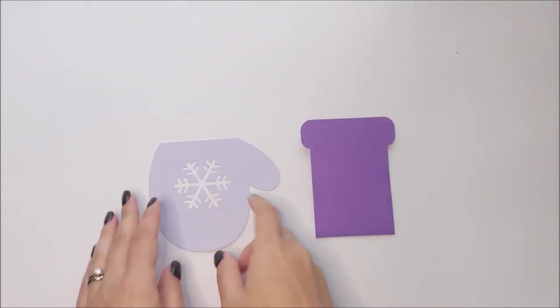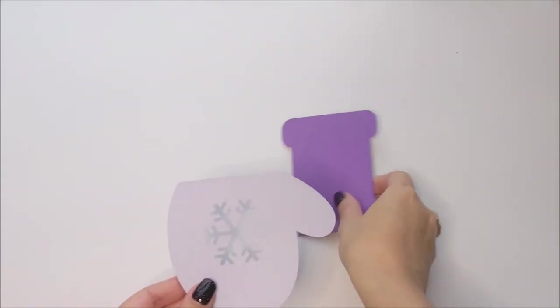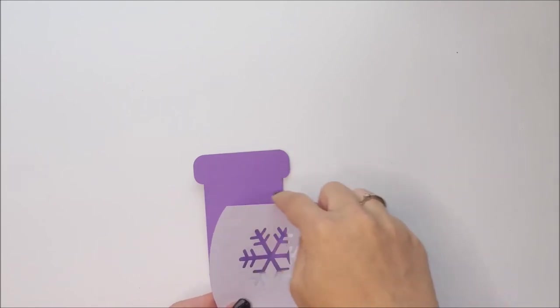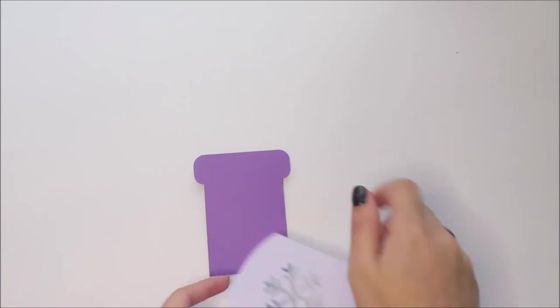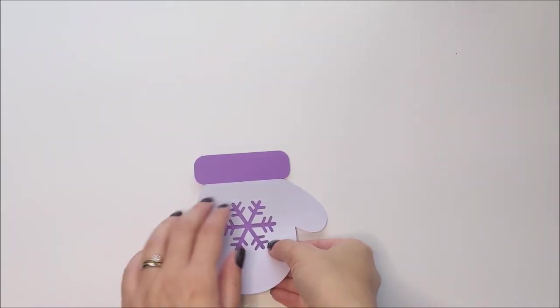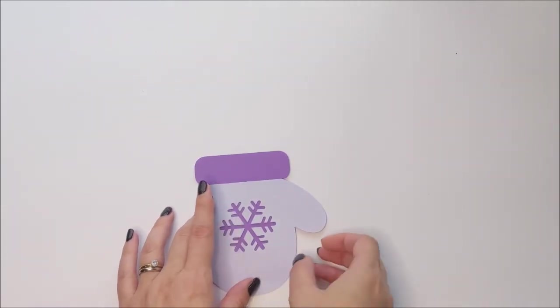Once the glue is dry, then you're going to glue on your mitten shape. So where you're going to align that is, if you see this flat edge here, you're going to align that right where these two curves come in. So you see the flat edge? We're going to put that right aligned with right where the curves come in, like so.